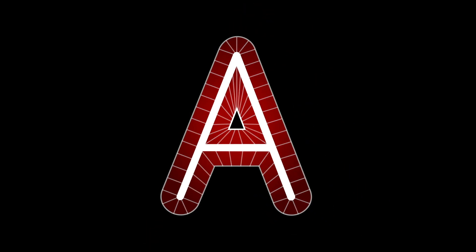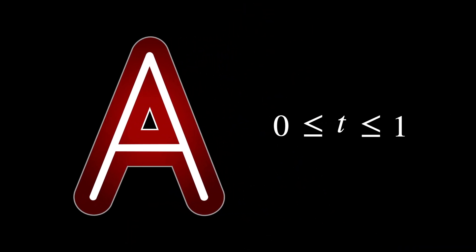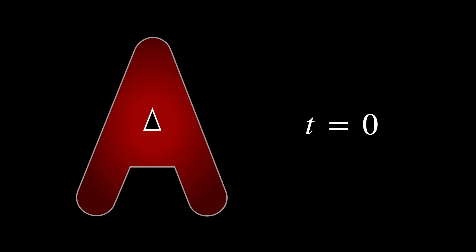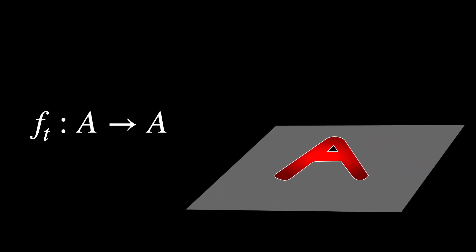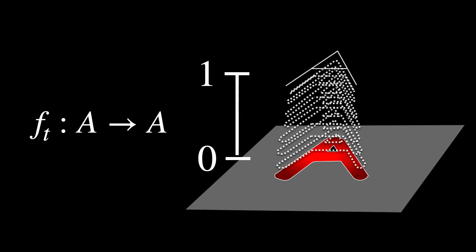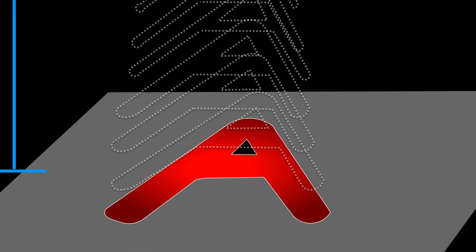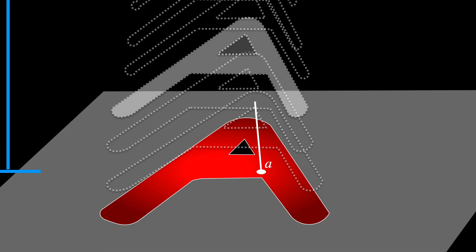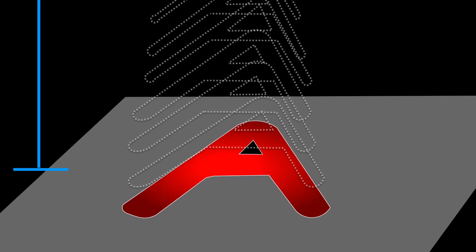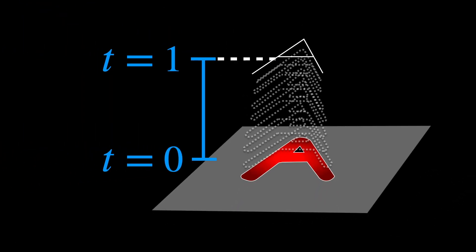This process happens during the time interval from 0 to 1. At t equals 0, the shape is in its thick form; at t equals 1, it is in its fully thin form. The process is described by the family of functions f_t from A to A. The subscript t indicates that the function is not static but varies with time. Each f_t corresponds to a specific moment in the transformation within the interval 0 to 1. Formally, f_t of a is the point to which a given point a has moved at time t.